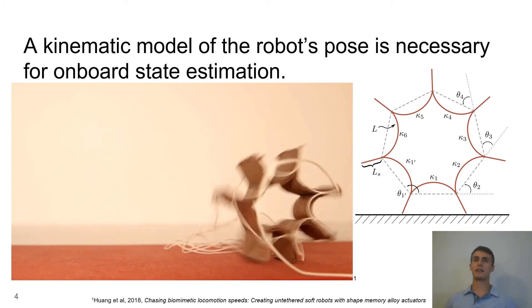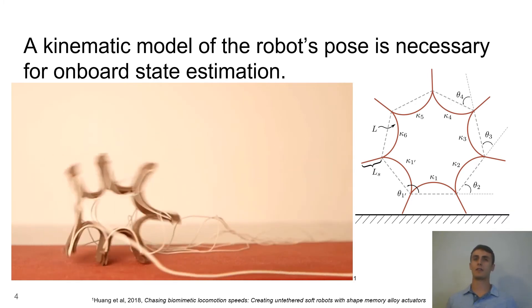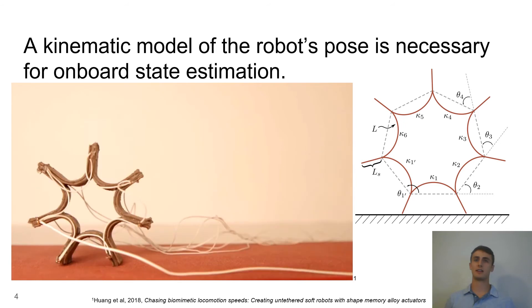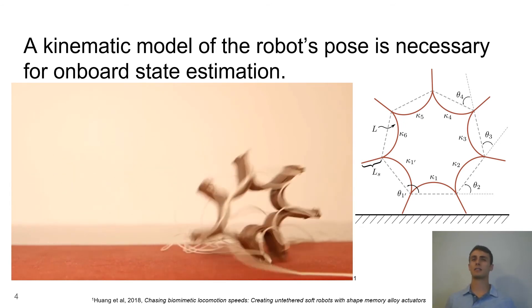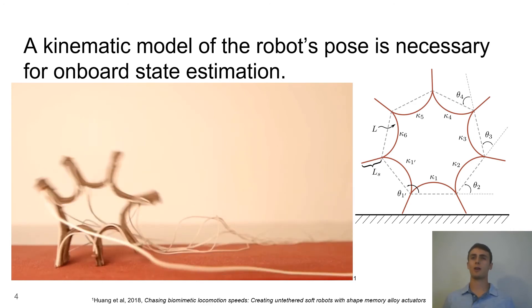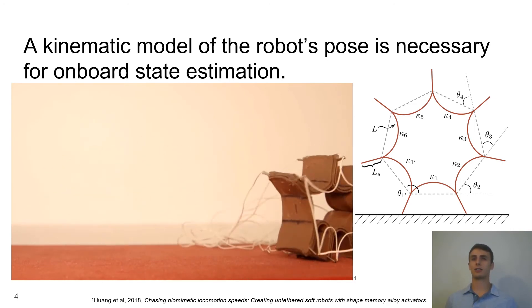To progress towards onboard state estimation, a kinematic model that describes the pose of the robot is necessary. This summer I created a novel closed form solution to describe the kinematics of the rolling star, a soft robot made of seven electrically actuated limbs.